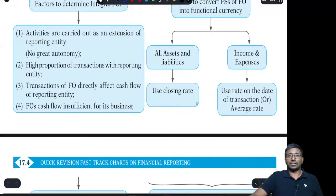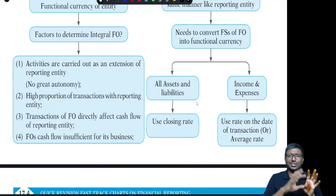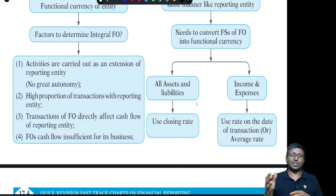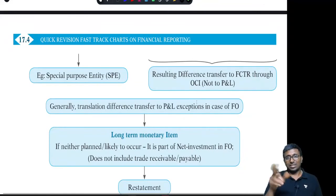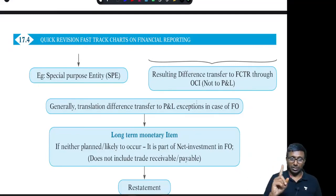Now you are supposed to convert the non-integral foreign operation's statements. It is very simple: all assets and liabilities — whether monetary or non-monetary — convert using the closing rate. All P&L related items — income and expenses — use the average rate. Technically, you should use the rate on the date of transaction, but the average rate is acceptable. After translation, the statements will not tally; there will be a fluctuation difference, which should be transferred to the FCTR — Foreign Currency Translation Reserve — account, not to profit and loss.